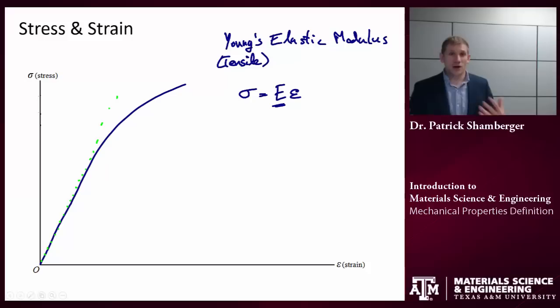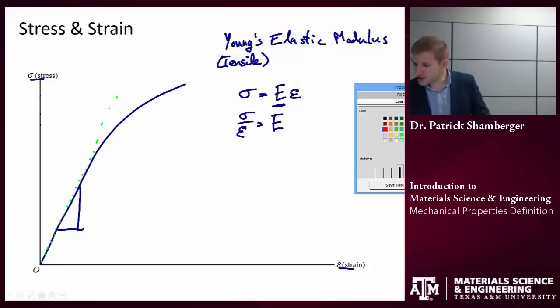So, if I were to rearrange this, I can see that the elastic modulus is just given by the stress over the strain, which is just a slope, right? Stress is on our vertical axis, strain is on our horizontal axis. So, rise over run, I can find the elastic modulus of a material just by looking at the slope of that initial linear section.